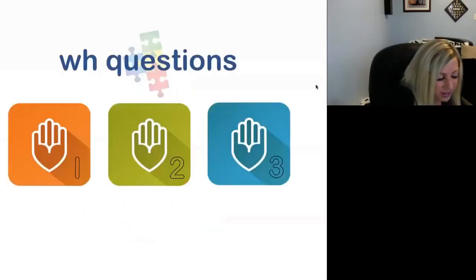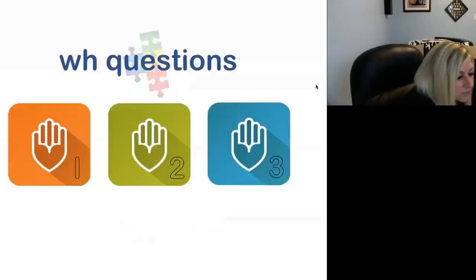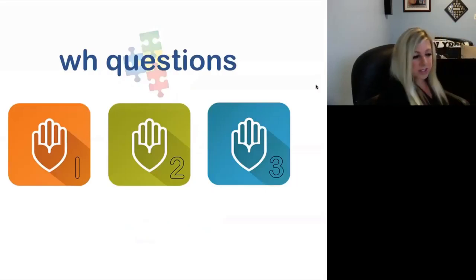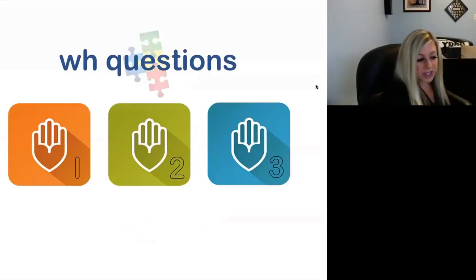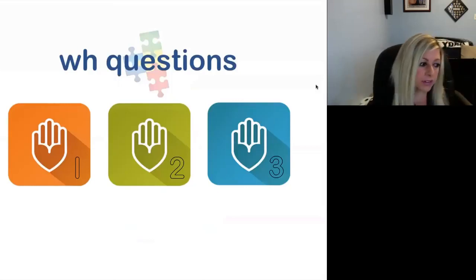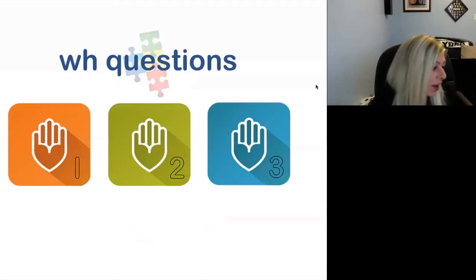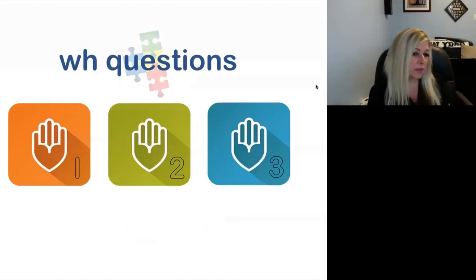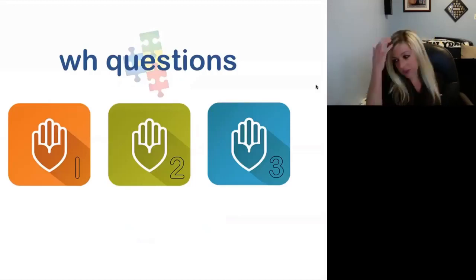This is a good app as well. There's a free version and there's an upgraded version for $3.99 with a few more options. This app targets all WH questions — who, what, where, when, why, how — with different types of visual stimuli across three levels of difficulty.